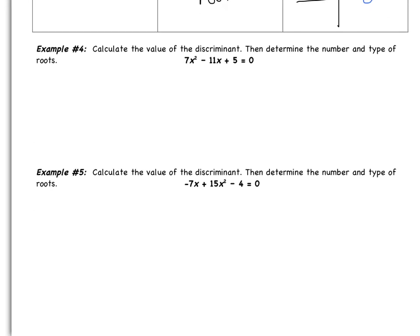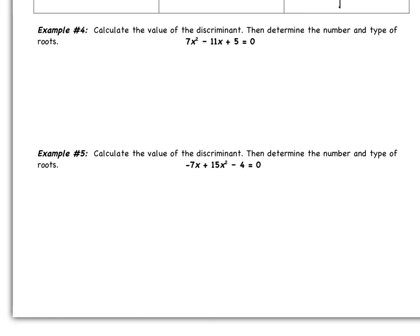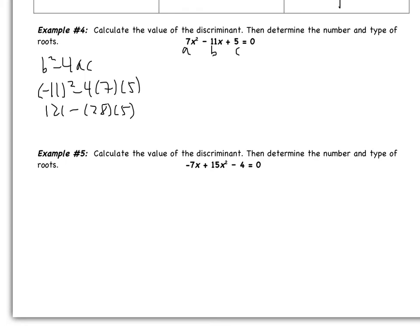Let's do example 4: calculate the value of the discriminant and determine the number and type of roots. The discriminant is b squared minus 4ac. Here, a is 7, b is negative 11, and c is 5. So this is negative 11 squared minus 4 times 7 times 5. That's 121 minus 140. Since 28 times 10 is 280, 28 times 5 is 140. So the discriminant is 121 minus 140, which is negative 19. Since it's negative, we have two imaginary roots.